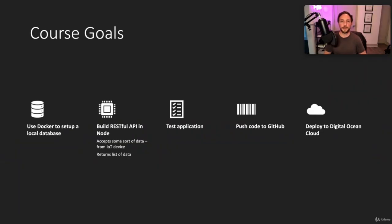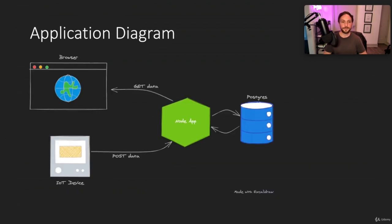Today we're sticking to something very practical. Say you have a bunch of IoT devices sending up data and you need to aggregate that data, store it in a database, and be able to query that data back. We're going to use Docker to set up a local database, build a simple RESTful API with Node that accepts data from an IoT device, write some tests, push to GitHub, and then deploy to DigitalOcean Cloud. The application diagram shows an IoT device posting data to the Node app, storing it in Postgres, and the Node app serving that data back to a browser.